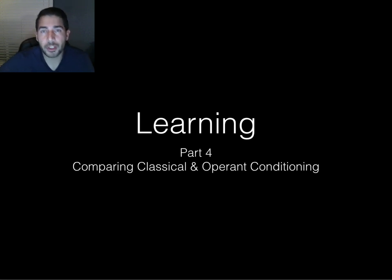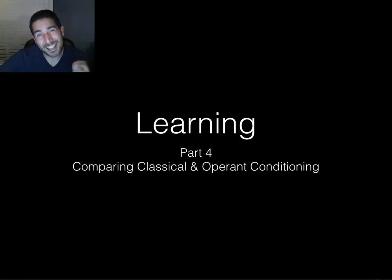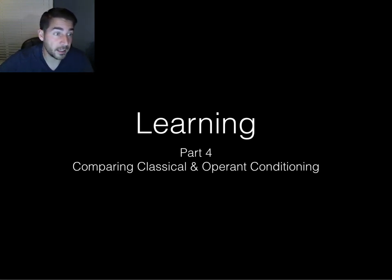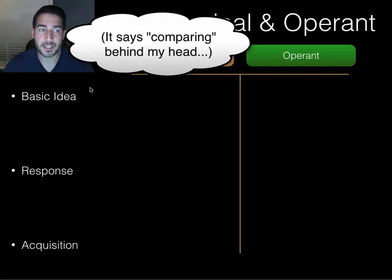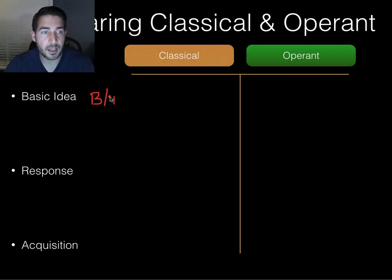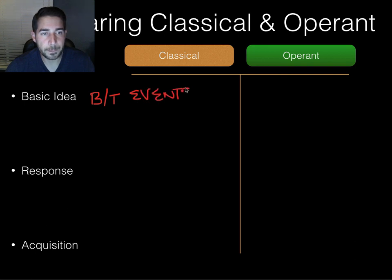Welcome to part four of learning. We're going to talk about a comparison between classical and operant conditioning in about 10 or so different ways that they compare. So what's the basic idea? The basic idea of classical conditioning is that organisms learn an association between events they don't control.